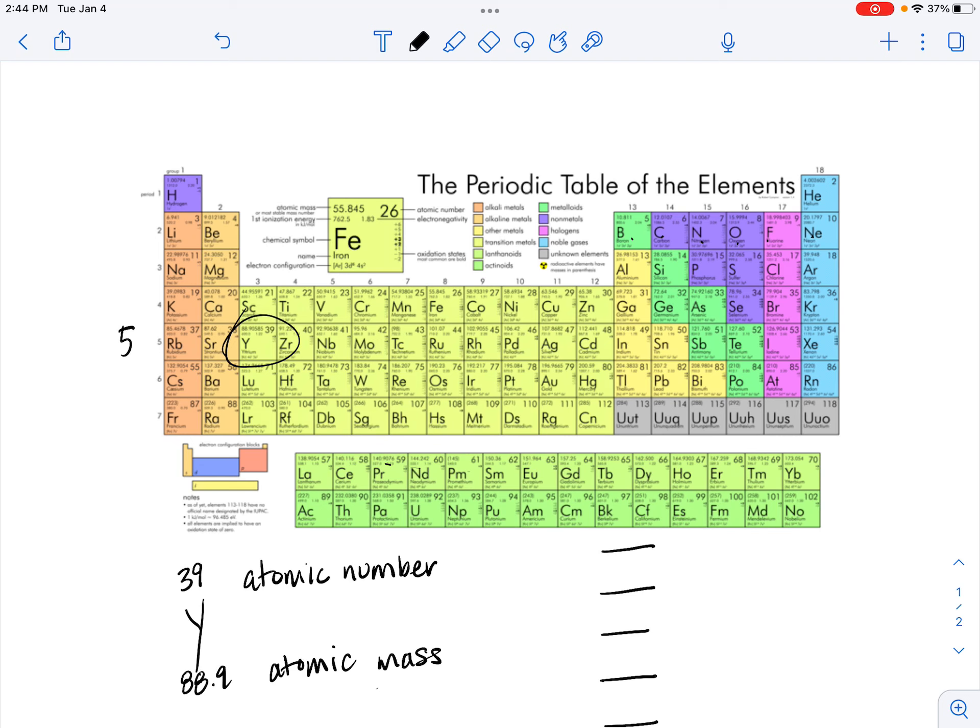So to write the full electron configuration, what we need to recall is the pattern or how the periodic table is organized based on orbital shapes. If you remember from first semester, unit seven, we've got our S block elements, which include helium. We've got our P block elements through the noble gases. We've got our D block elements, which are the transition metals, and then we have our F block elements, which are the lanthanides and actinides.